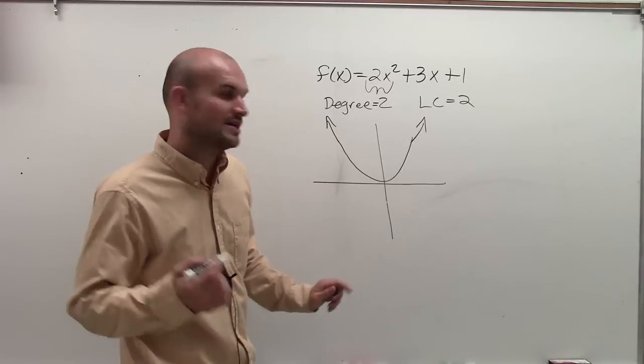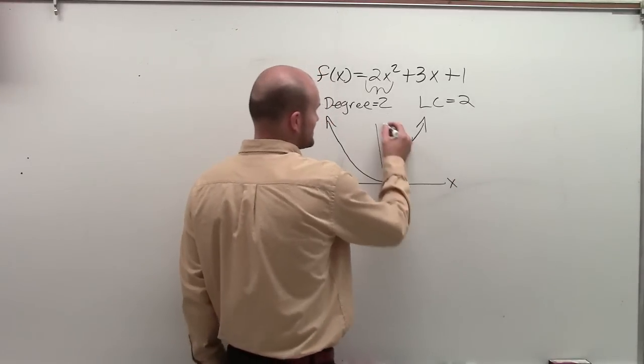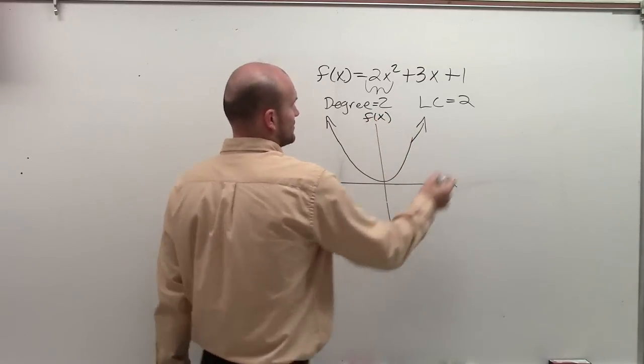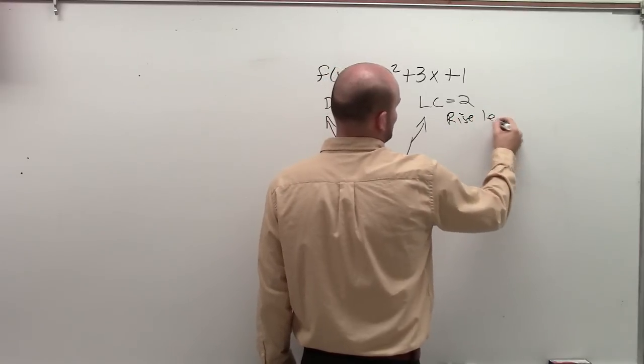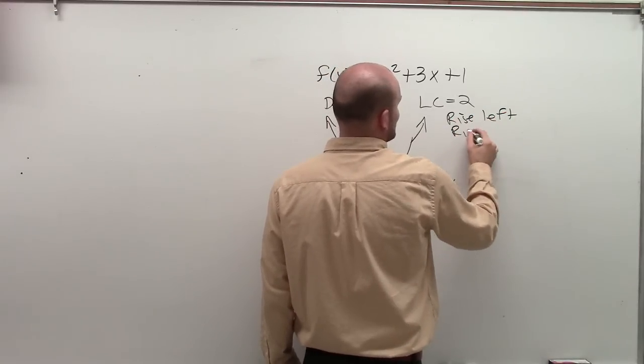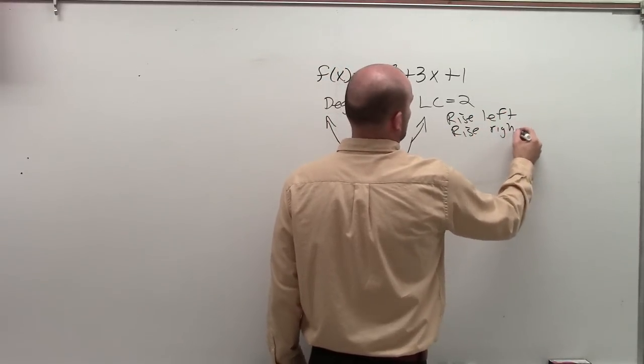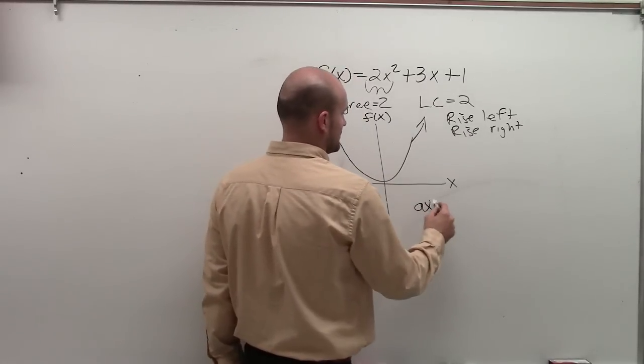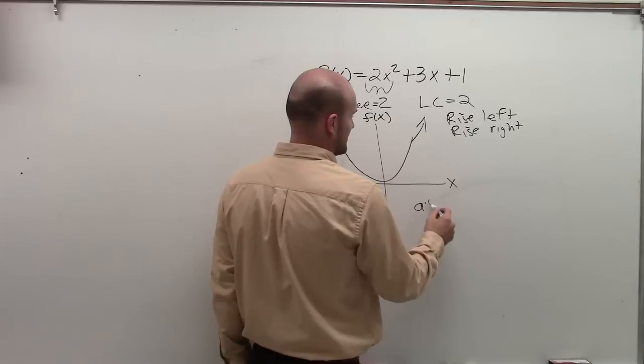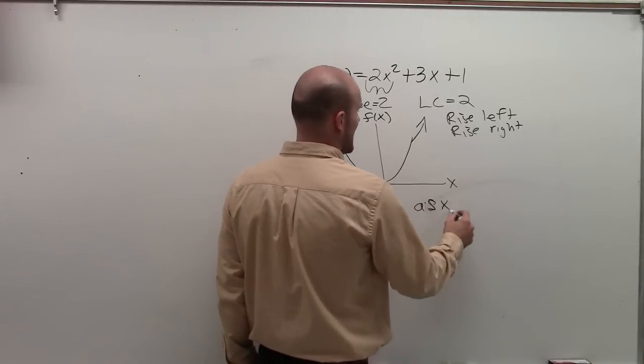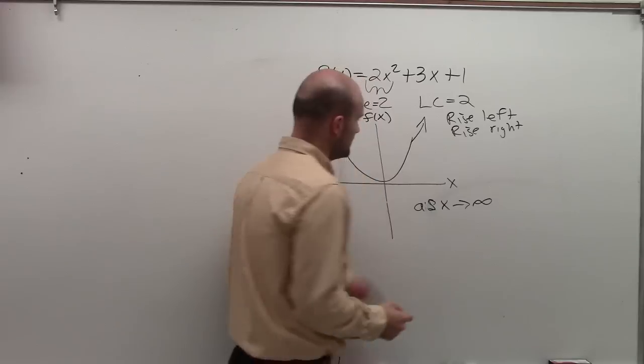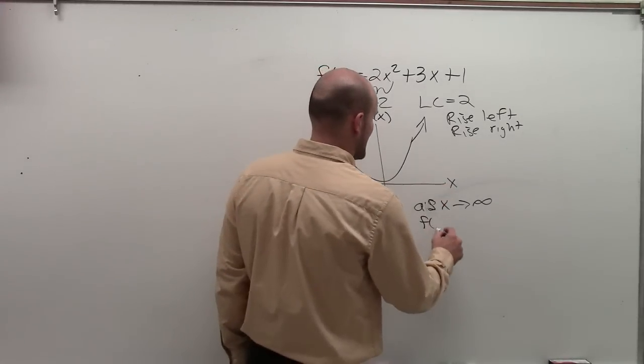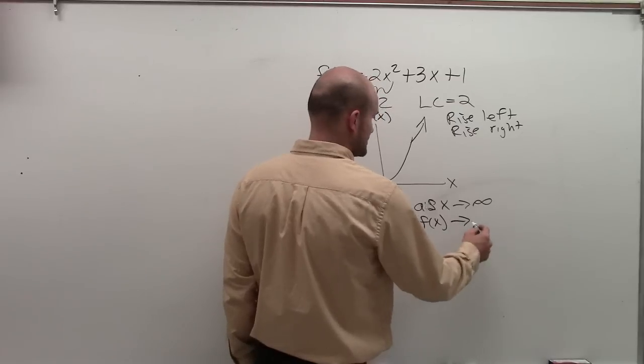So one thing I also want to just let you know of, here's our x-axis, and here is our f of x. Another way to write rise left and rise right, we can write that as x, as x approaches infinity, so as my x terms approach infinity, f of x approaches infinity.